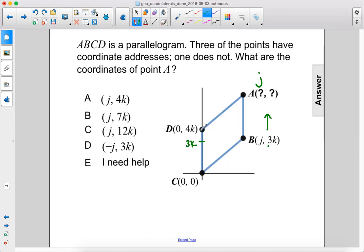Well, we go the same length as here. Here we go from 0 to 4k, so we're going to be adding 4k to the y coordinate here to find our new y coordinate, so that would be 7k. The answer is B.